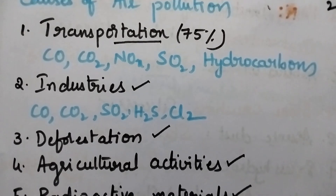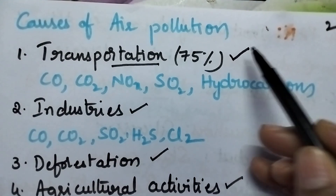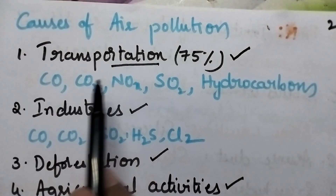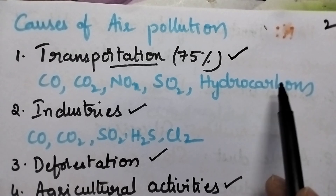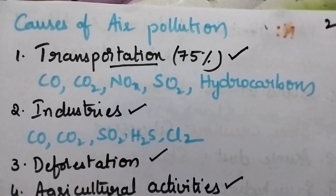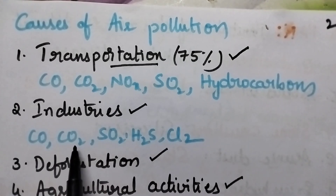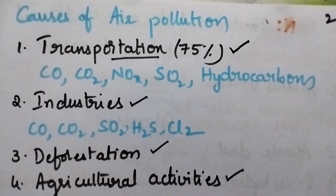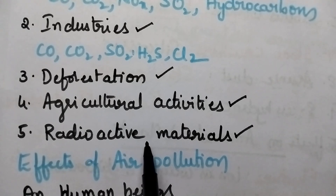The major causes of air pollution include transportation, which contributes 75 percent. Due to transportation, dangerous gases like carbon monoxide, carbon dioxide, oxides of nitrogen, sulfur dioxide and hydrocarbons are released into the air. Industries contribute by increasing carbon monoxide, carbon dioxide, sulfur dioxide, H2S and chlorine gas levels. Other causes include deforestation, agricultural activities and the presence of radioactive materials.